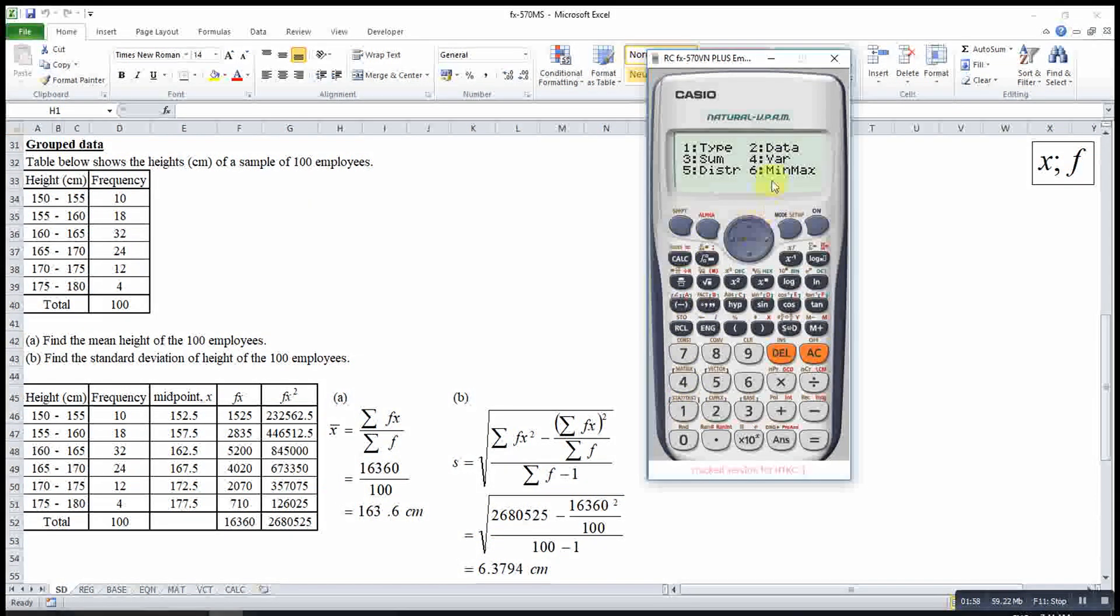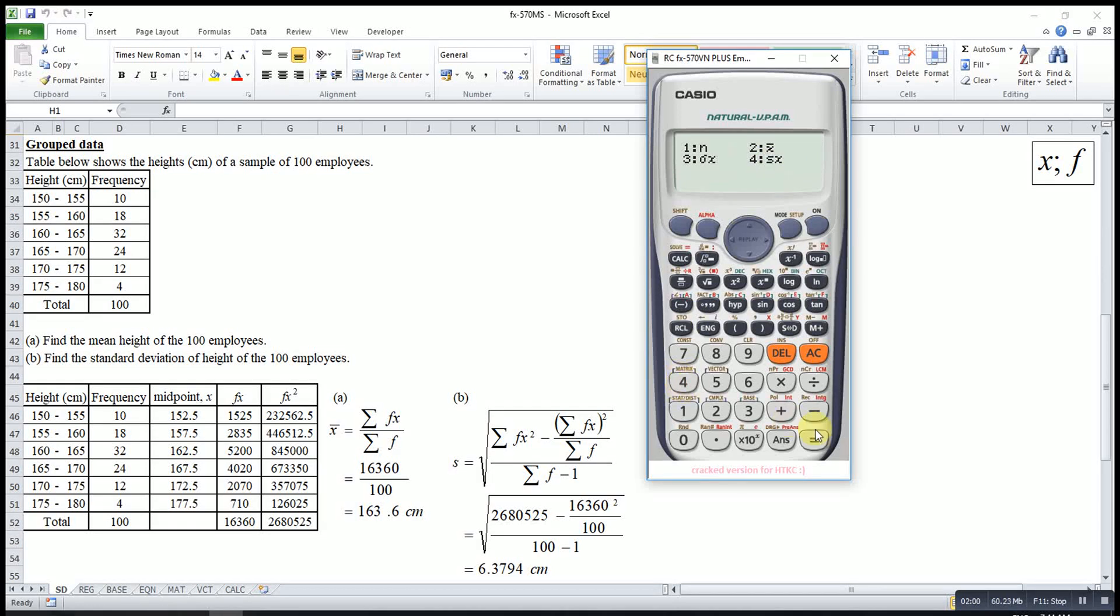If let's say I want mean and standard deviation. Same as group data. Shift 1. We press 4. Then 2. Equal. So this one will be the mean.